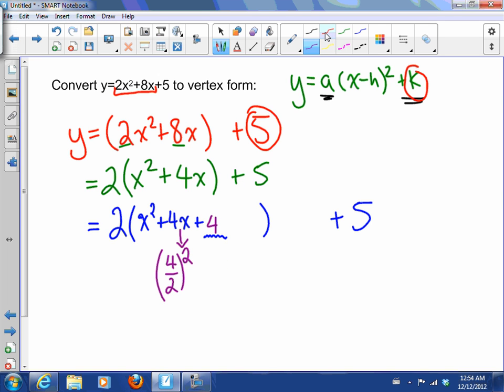So 4 over 2 squared, so that's 2 squared which is 4. Now we're going to talk about why that is. What I also want you to notice is that I can't just add 4 into the equation, that's not allowed, but I could add 4 and then subtract 4. That hasn't changed anything.